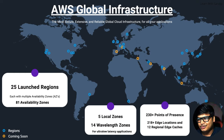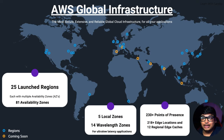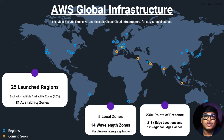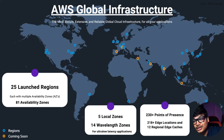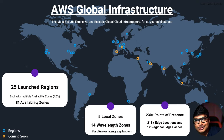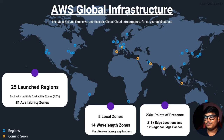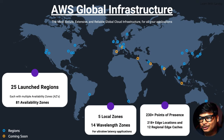There are also 5 local zones, 14 wavelength zones for ultra-low-latency applications, 230+ points of presence, 218+ edge locations, and 12 regional edge caches. I'll be covering edge locations in this session. Now let me go into more depth about what each of these is.